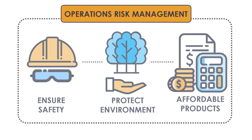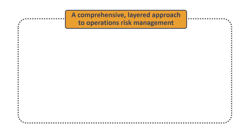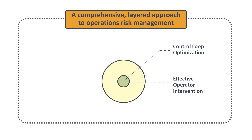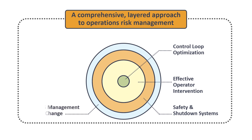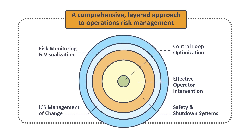A comprehensive layered approach to operations risk management addresses control loops that operate processes with no human intervention, alarm systems and high-performance HMI to ensure operator situation awareness, automated safety systems to shut down processes when necessary, management of change to monitor unauthorized changes, and ultimately good visualization on system status.